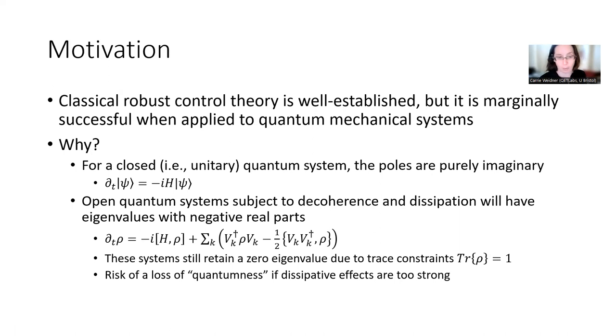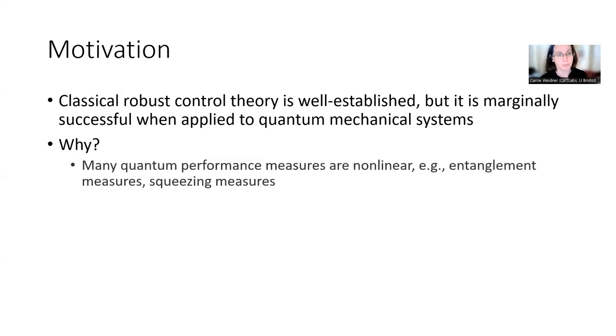But unfortunately, these systems do retain a zero eigenvalue that's due to the trace constraints and the fact that the trace of our density matrix has to be unity. And you can say, oh, well, we're done here because we can just push the poles of our system onto the left half of the plane, but one risks losing the quantumness of the system. And so it's really that unitary behavior that gives us that quantum advantage that we're trying to find. And many quantum performance measures are non-linear, like entanglement measures, we'll discuss one later on in this talk, and things like squeezing measures.